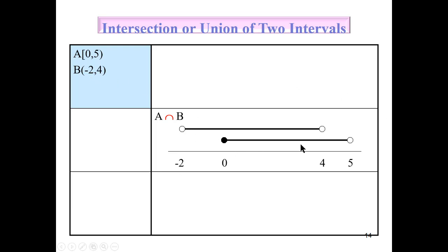If it is intersection, then we have to do the intersect between A and B. So that is the shaded region. We get 0 until 4, where 0 is included but 4 is excluded, so that is an empty circle.